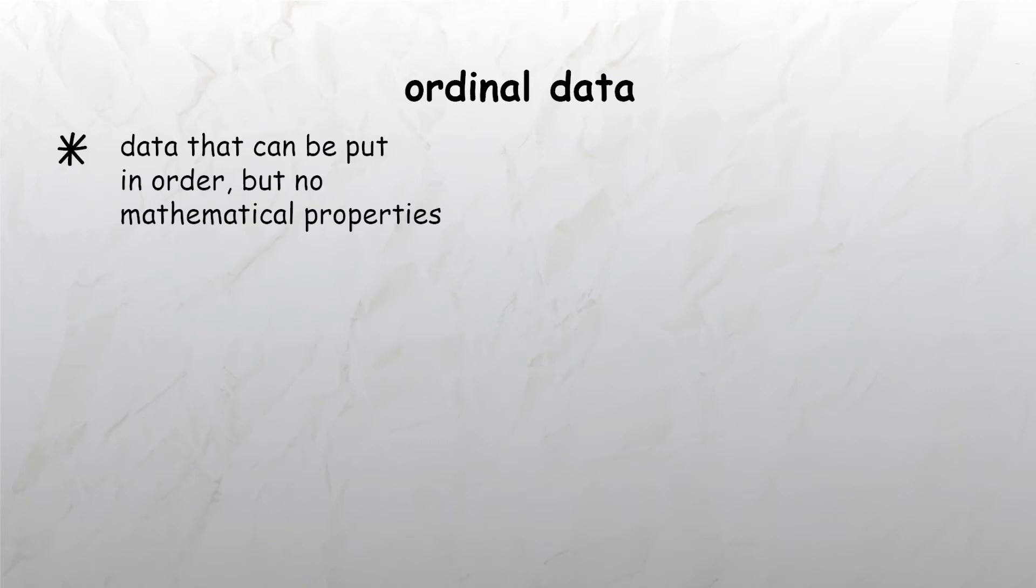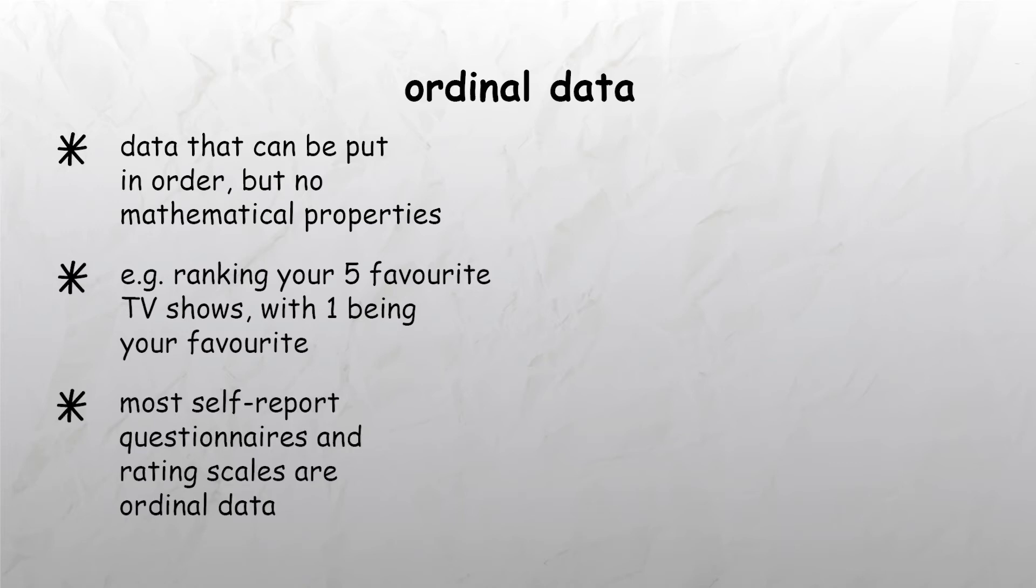Ordinal data involves numbers that can be put in order but do not have any mathematical properties like rating scales. It's useful to think of it as a list of things that are ranked from top to bottom. An example of this would be ranking your five favourite TV shows in order, one being the most favourite. In psychology, most of the scores obtained from self-report questionnaires and rating scales are classed as ordinal.